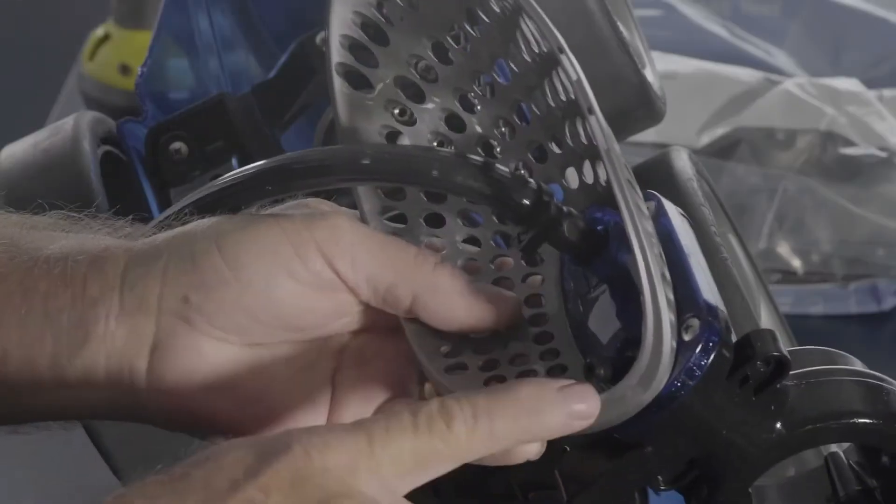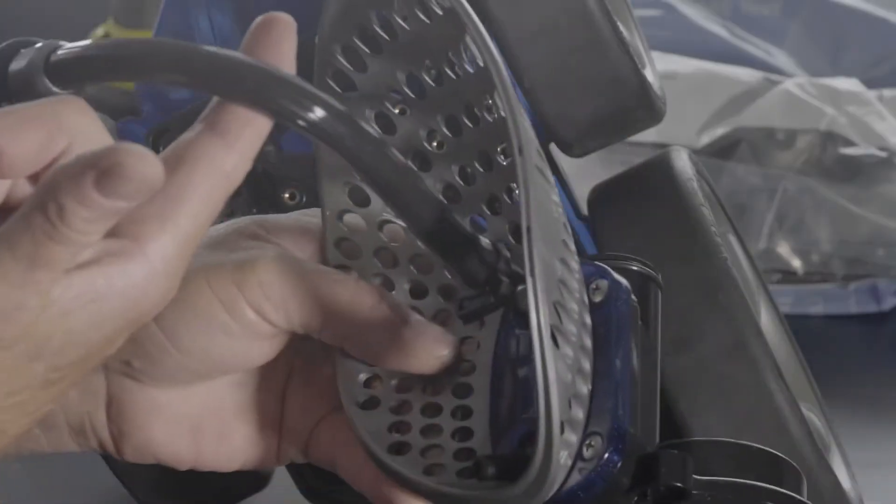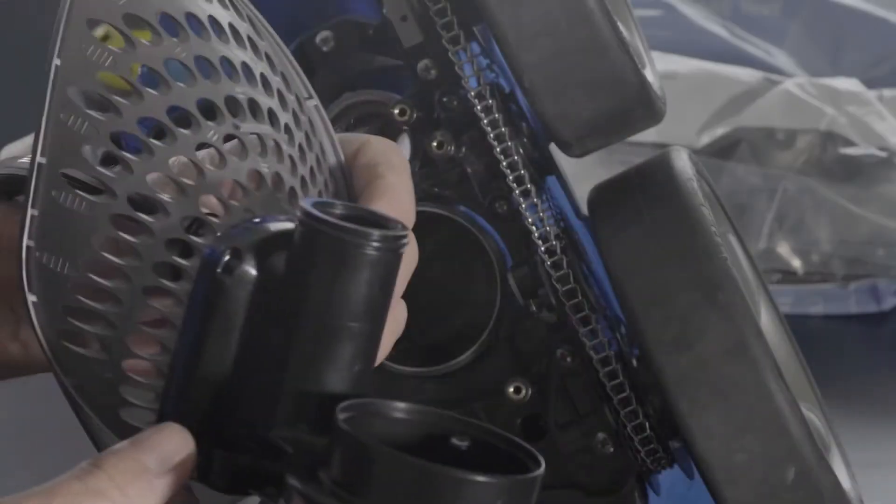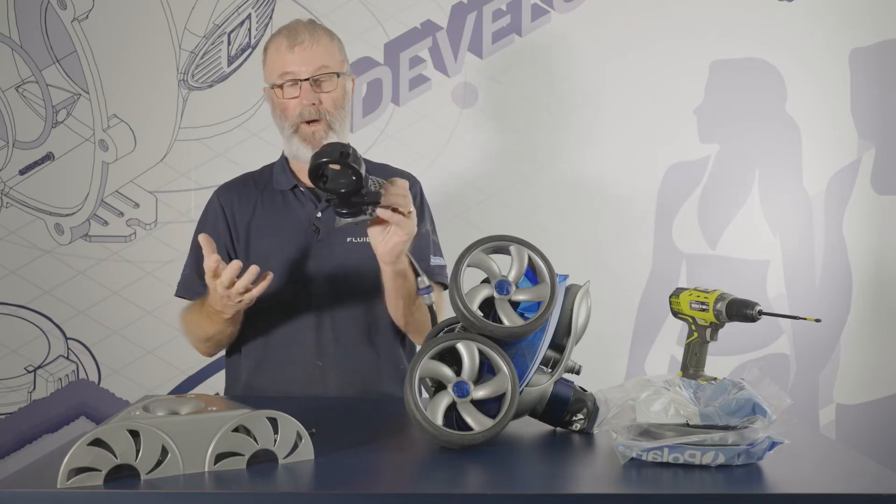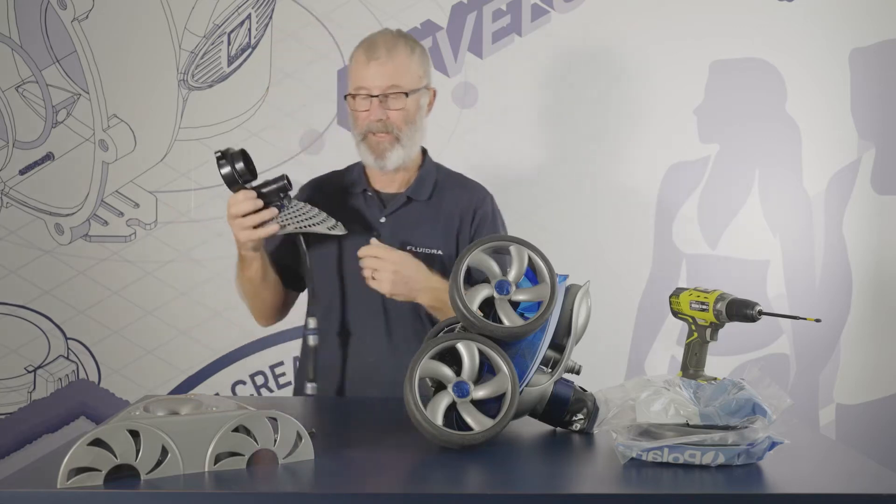You've got your three Venturi jets firing up into there. You've got your thrust jet out the back and your hose, your sweep hose. And that's it. It's all in one little unit. Very easy.